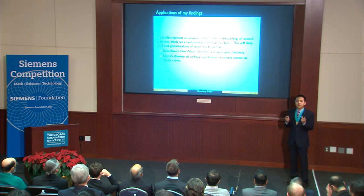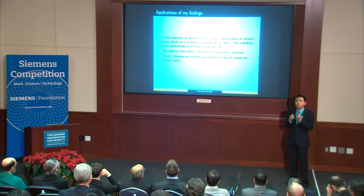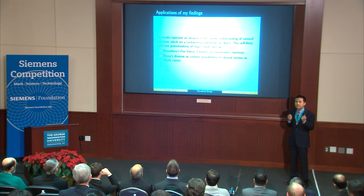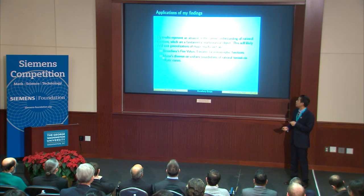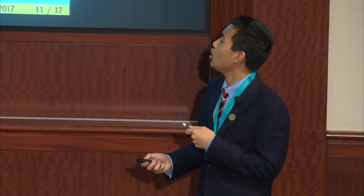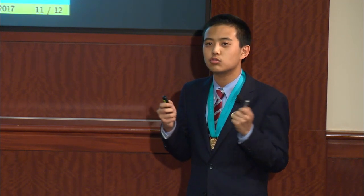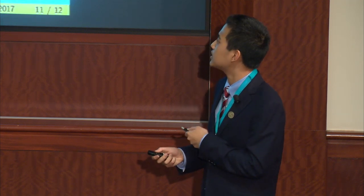Now let me talk about the applications of my results. My results represent a significant advance in our understanding of rational functions, which are a fundamental mathematical object. This has both direct and indirect applications. On the math side, my results will likely yield vast generalizations of major results, like Nevanlinna's five values theorem for meromorphic functions, as well as Merel's theorem on the uniform boundedness of rational torsion of elliptic curves. On the practical side, any fundamental advance in math or science will have countless practical applications. One potential application of my result is to engineering, where some phenomena, like the collapse of this bridge, can be understood with rational functions. Had my results been known at the time of the design of the bridge, it is possible that this bridge would not have collapsed. I certainly hope that my results can be used to ensure that future infrastructure is safer, thus ensuring that disasters like this never occur again.